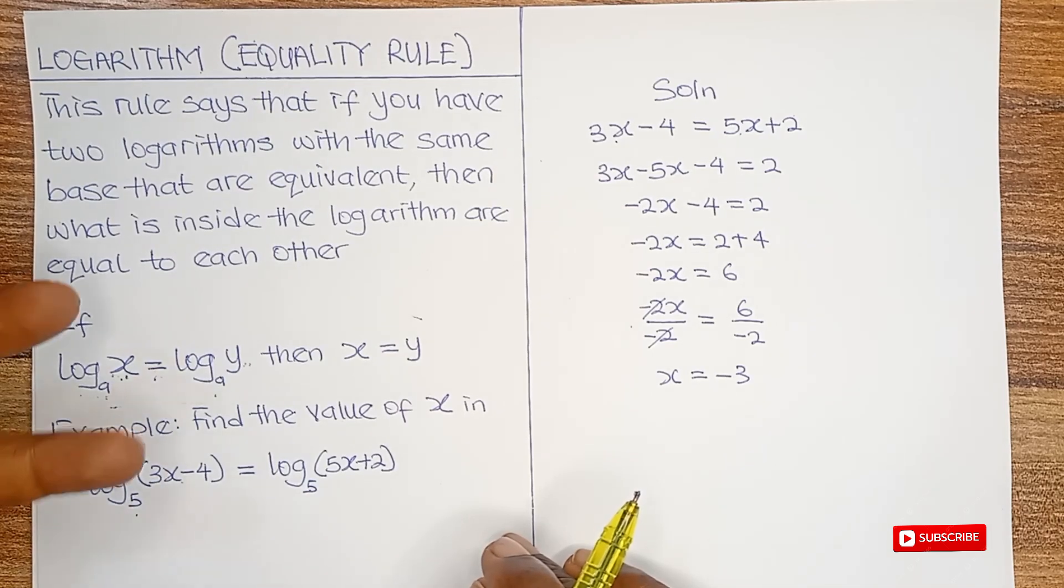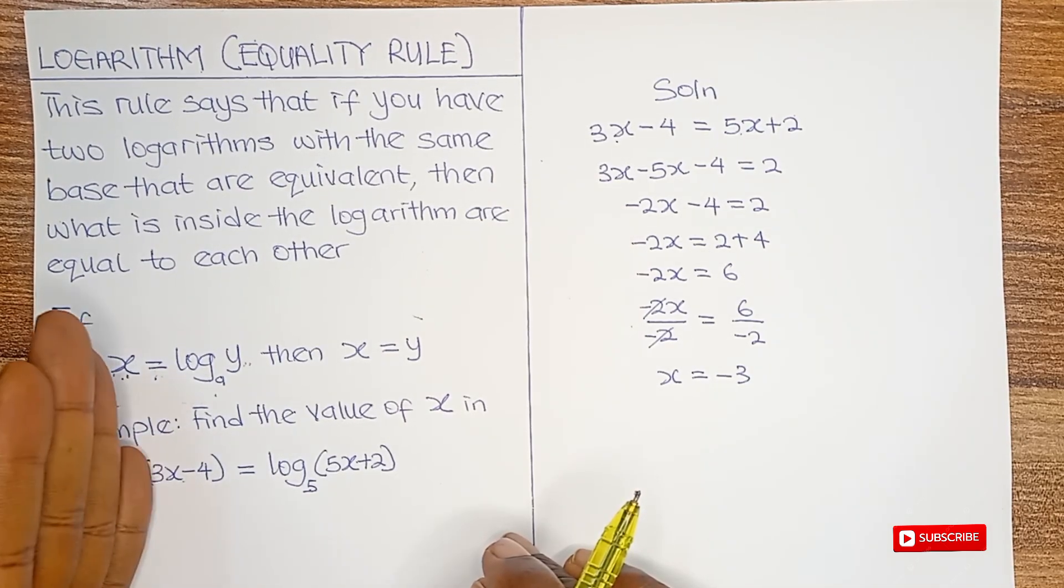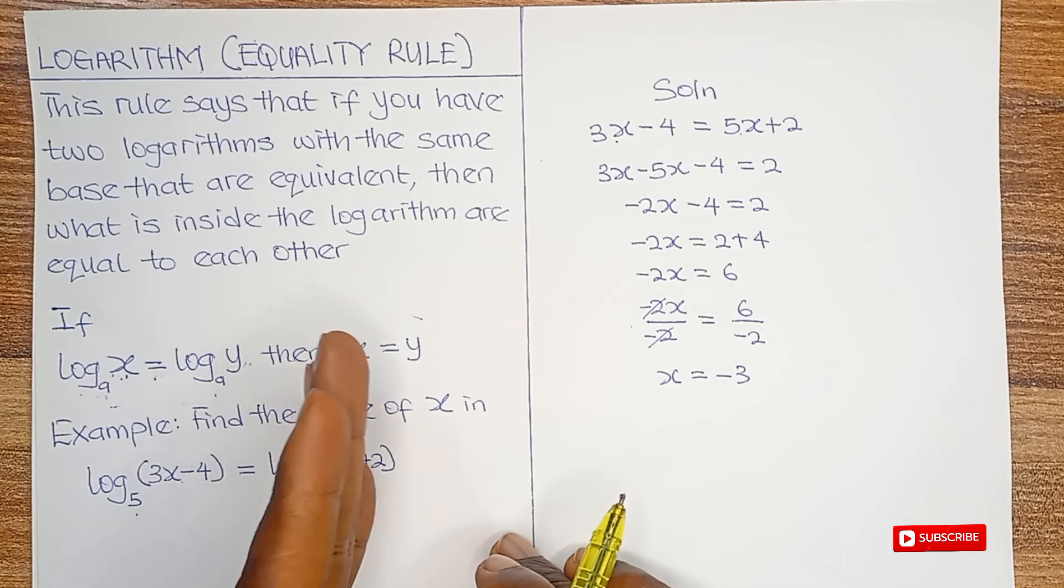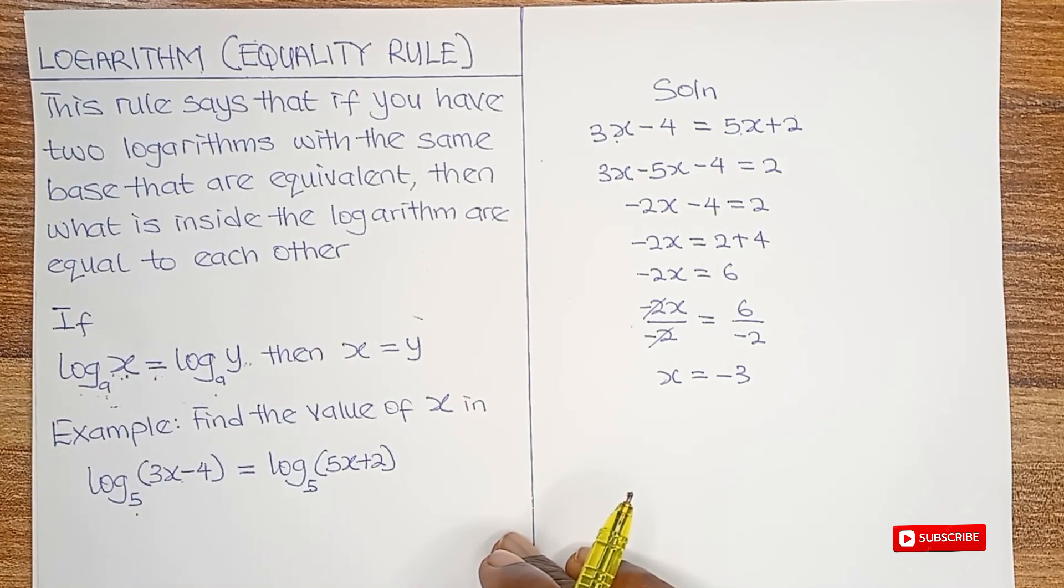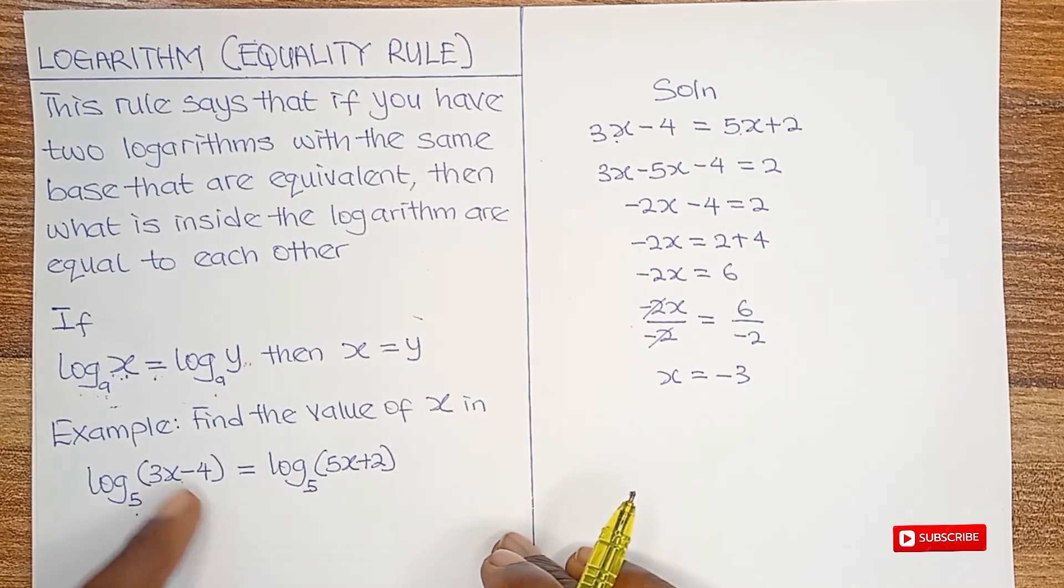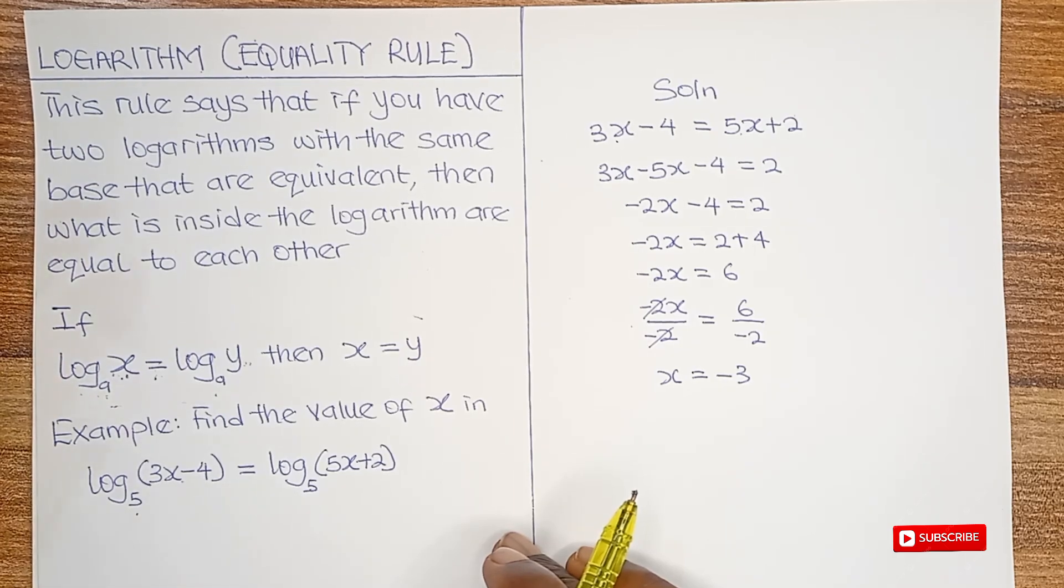This means that's the value of x that makes the left side of this equation equal to the right side of this equation. So what have you learned from this video? Whenever you see two logarithms that have the same base and are equal to each other, all you need to do is equate the values in the logarithm. It's very simple to do.